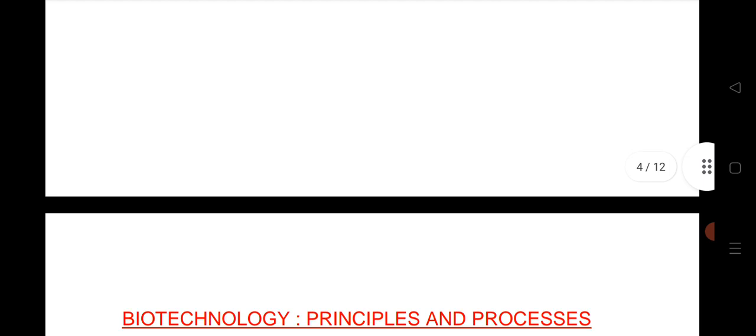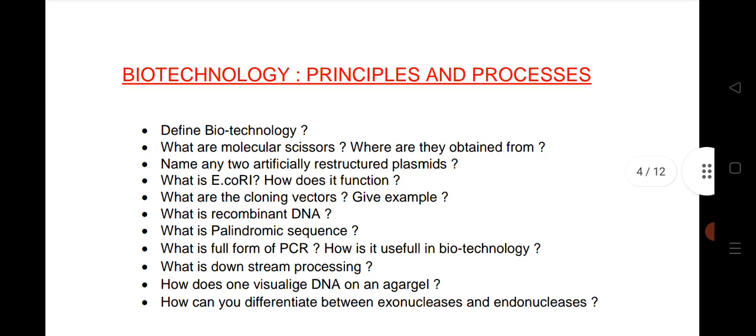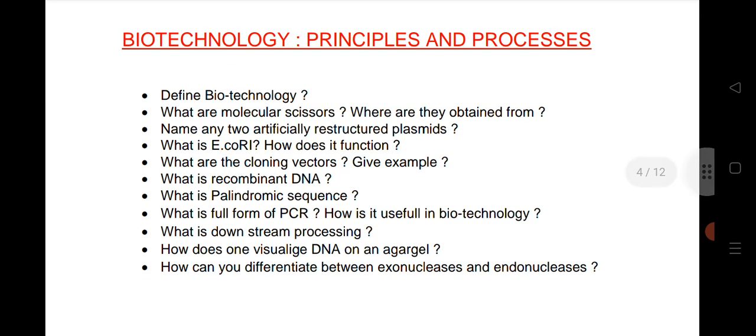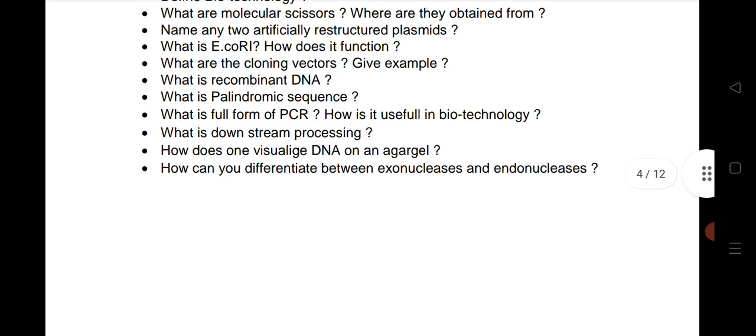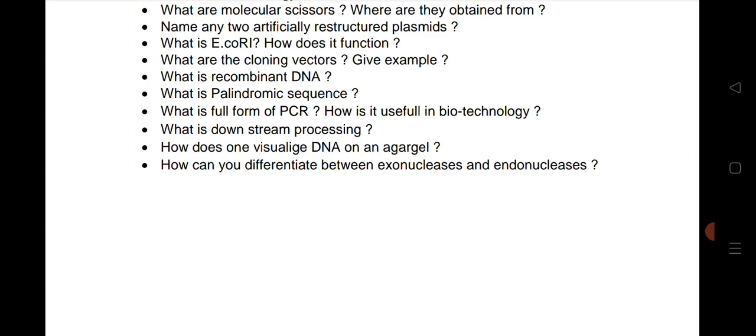Next is Biotechnology Principles and Processes. Biotechnology molecular scissors, two artificially restructured plasmids. All are very important. Palindrome is a very important question, full form of PCR, stream processing, DNA and difference between the last one.